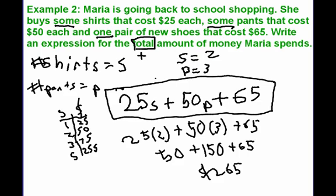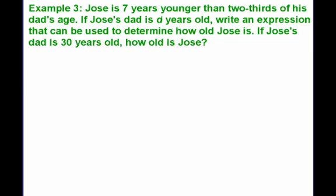We can use this expression to model this paragraph. Let's try a third and final example. Jose is seven years younger than two-thirds of his dad's age. If Jose's dad is D years old, write an expression to determine how old Jose is. If Jose's dad is 30 years old, how old is Jose? Pause the video and try this one on your own.